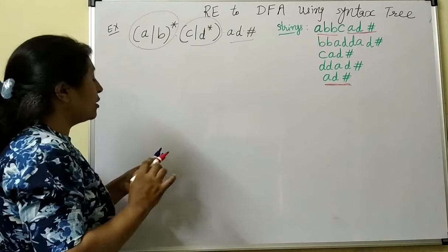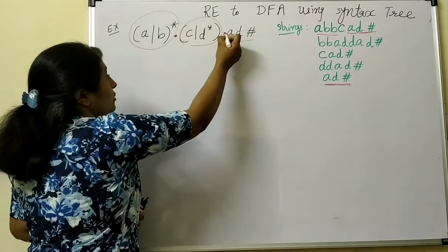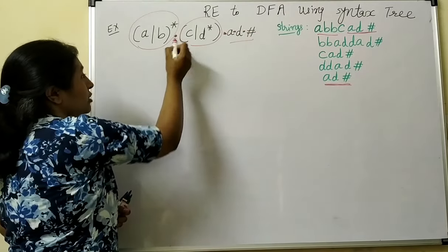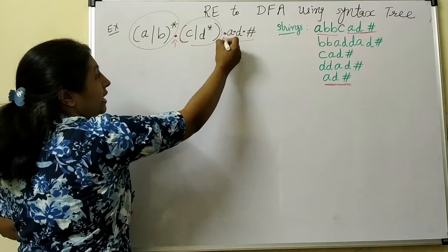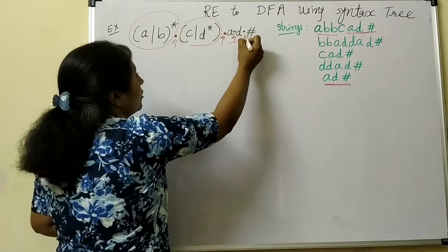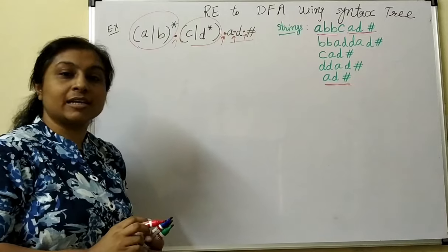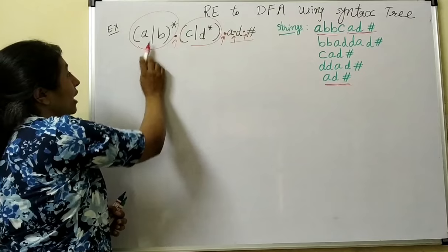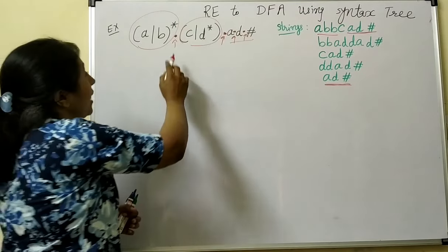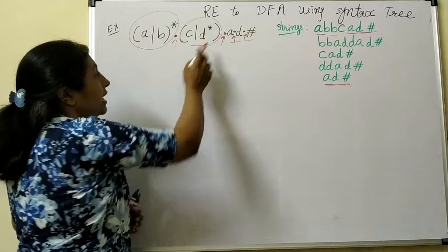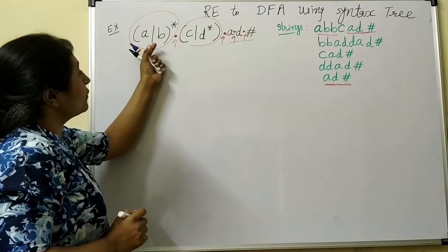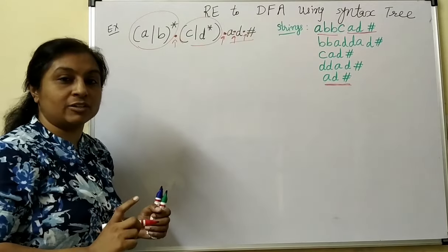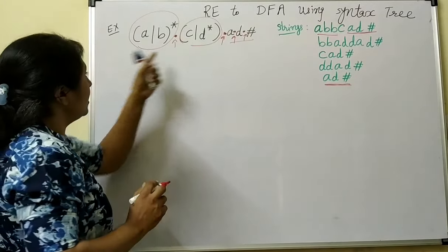For construction of the syntax tree, concentrate on concatenations. The first concatenation is evaluated first, then the second, third, and fourth. To apply this concatenation we require the result of A union B whole star on the left, and C union D star on the right. So first let us construct the tree for these.